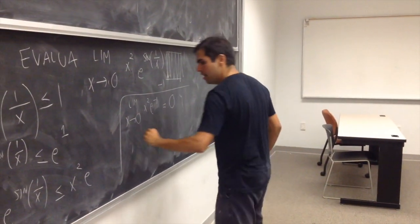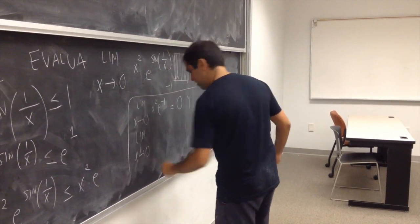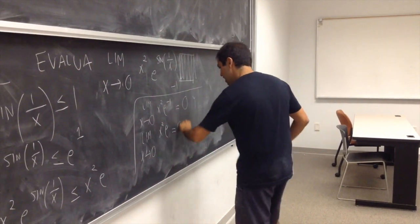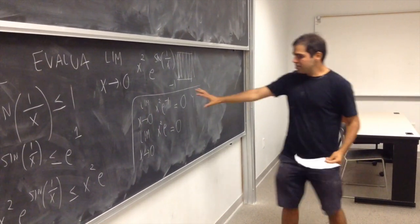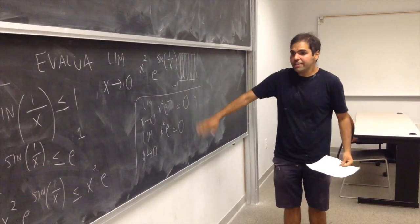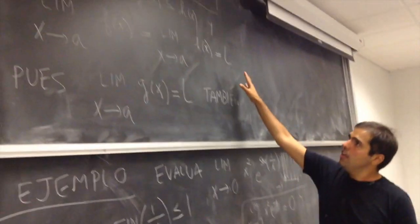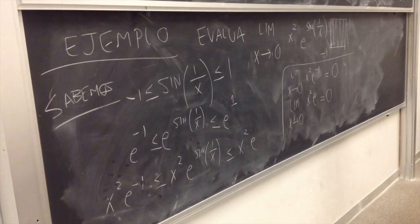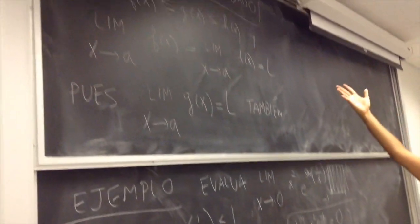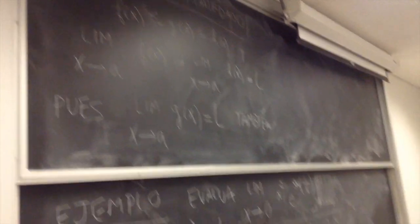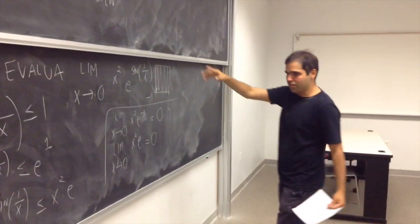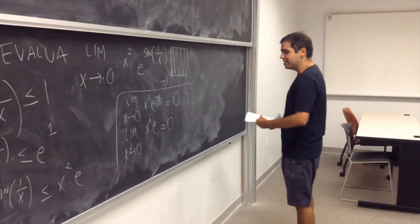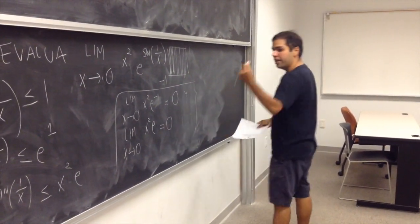y el límite x tiende a 0 de x cuadrado e es igual a 0 también. Por eso tenemos un límite común, y además la función es entre las dos funciones, por eso podemos utilizar este teorema para concluir que la función de la media, x cuadrado e a la seno de 1 por encima de x, tiende a 0 también.